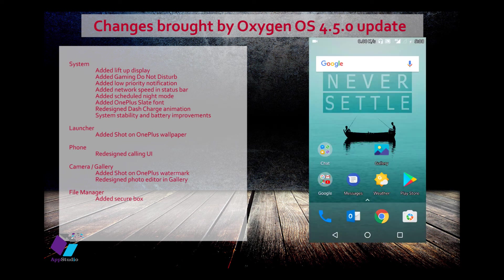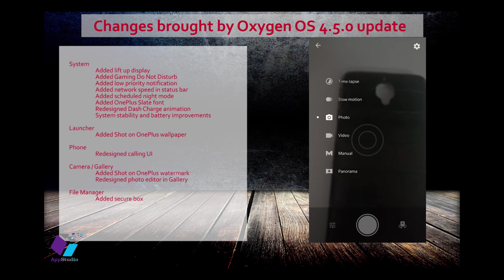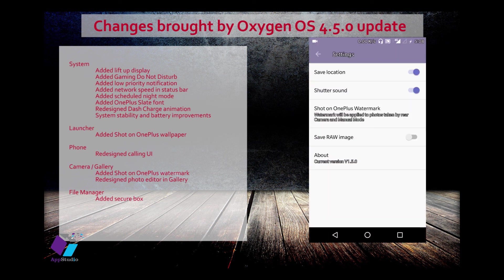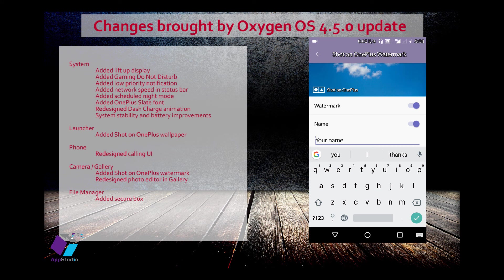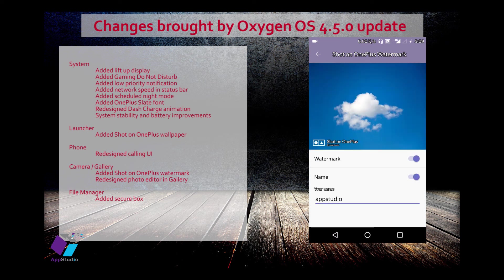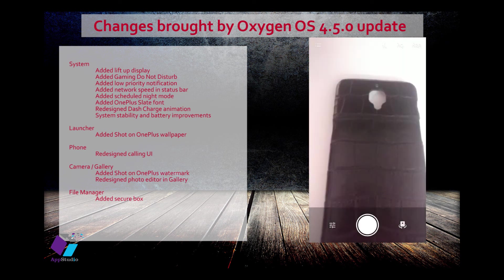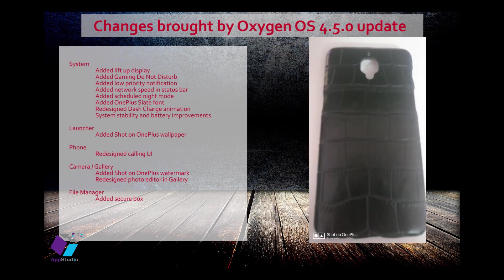Now let's look at the camera and gallery updates. They have added additional features in both. If you go to camera Settings, you can see an option called Shot on OnePlus watermark. You can add a watermark saying 'Shot on OnePlus' and also add your name, which will then be displayed on your camera images.